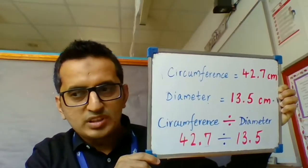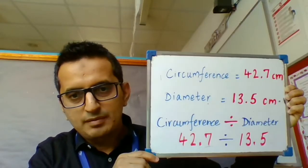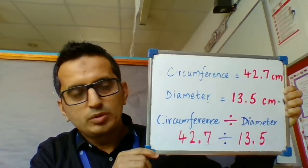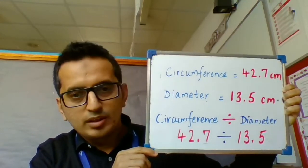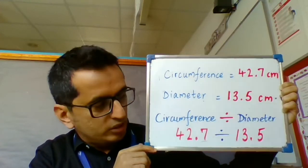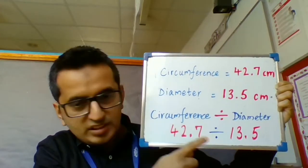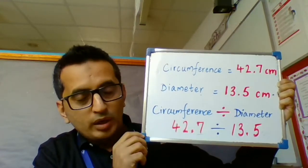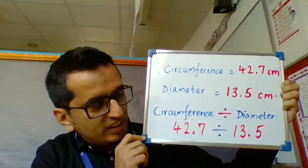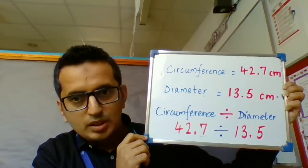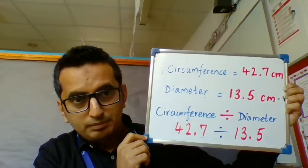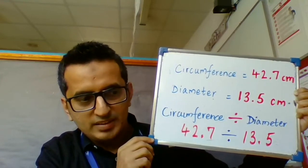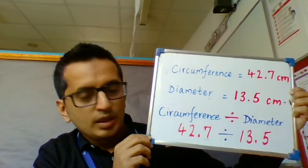Now once you have your circumference and diameter written, what you need to do is find the ratio of circumference to diameter. So divide the circumference by the diameter and find out what the answer is. You can round up your answer to the nearest two decimal places.